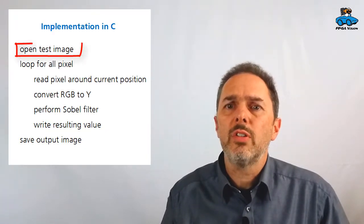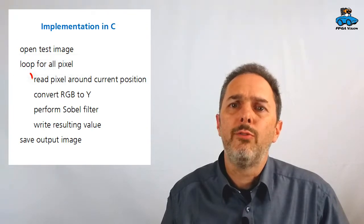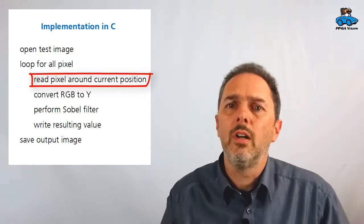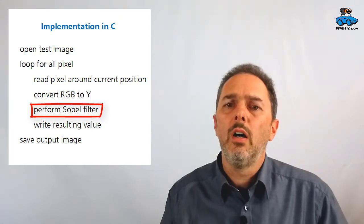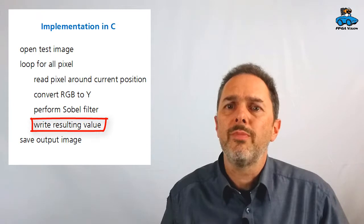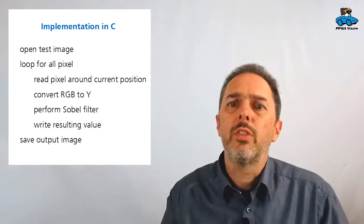The next step would be an implementation as a C program. We take our test images and let this algorithm run for a number of test images. You have a C file which does the following processing: First you open the test images. Then you have a loop for all pixels in X and Y for the image. For every pixel you do a processing of reading the pixel around the current position. You convert the RGB to a luminance. You perform the Sobel filter. Write the resulting value to the image. Then after you completed the loop, you write the complete image back to the file, and you can check what the result of your processing is.